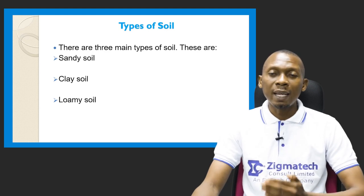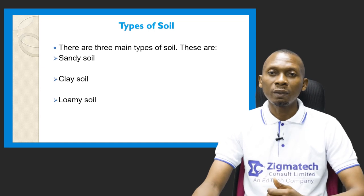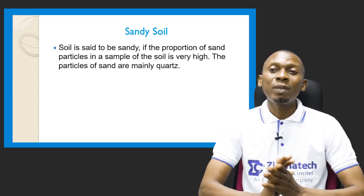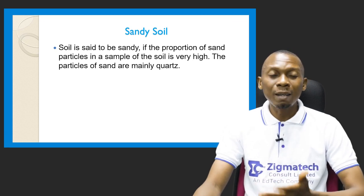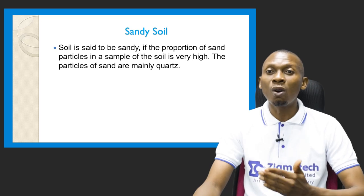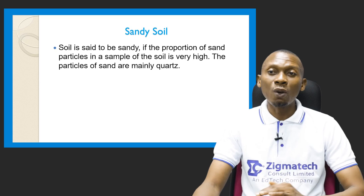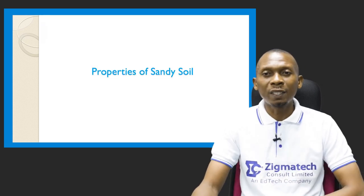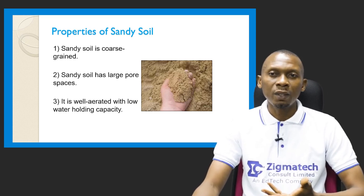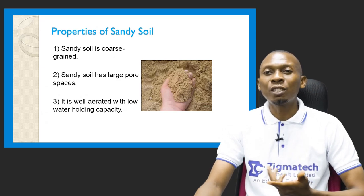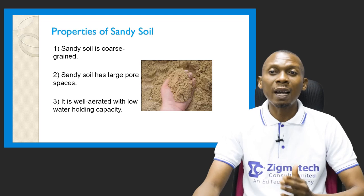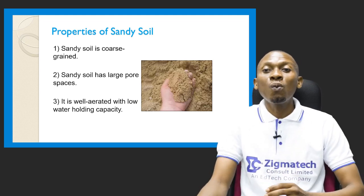There are three main types of soil: sandy soil, clay soil and loamy soil. A soil is said to be sandy if the proportion of sand particles in a sample is very high. The particles of sand are mainly quartz. Sandy soil is coarse-grained — that means it's rough and gritty. It also has large pore spaces, which are tiny holes found in the soil.